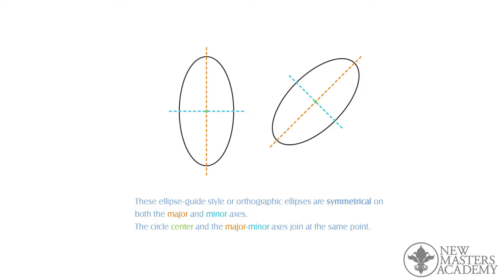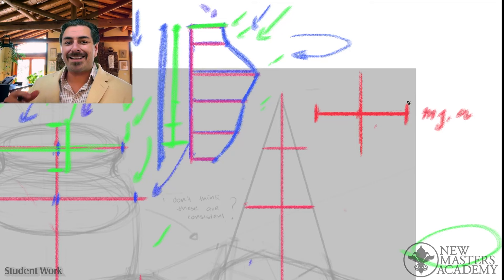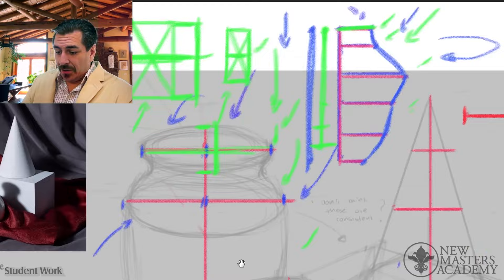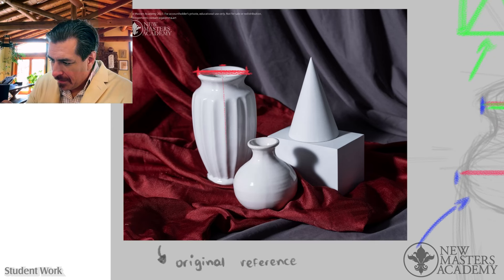So all you actually need is the major axis. And then the minor axis, when you're doing something like this, you're going to observe it. Well, how tall does the ellipse look versus how wide? So you're just looking at it. This is an ellipse here. It's this wide and it's this tall. That's all the information you need from observation to construct the same ellipse over here.